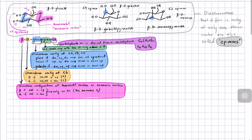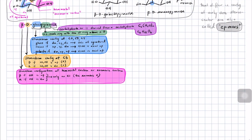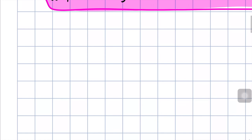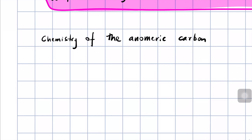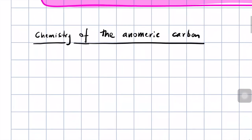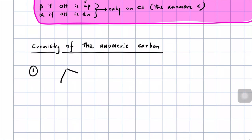Let's begin our discussion of carbohydrate chemistry by talking about the stereochemical configuration of C1 — the anomeric carbon. I'm going to rewrite the structure of glucose. We'll call this section: chemistry of the anomeric carbon. First, here is beta-D-glucopyranose in the cyclic hemiacetal form.